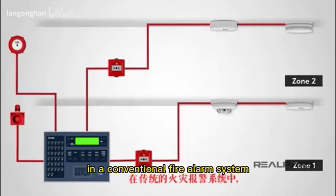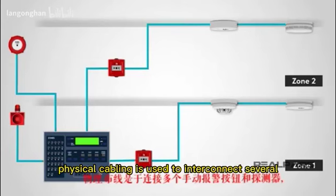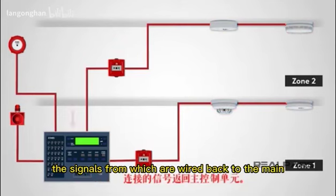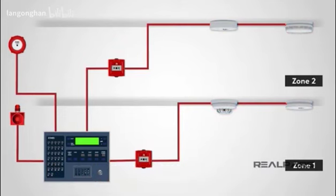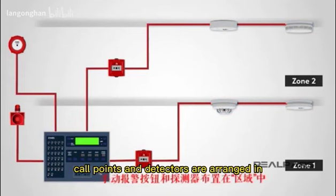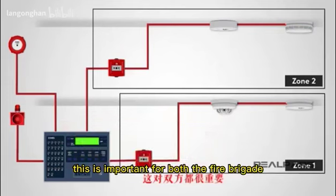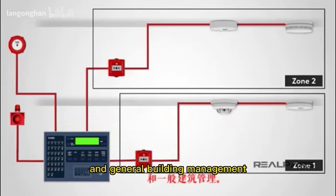In a conventional fire alarm system, physical cabling is used to interconnect several call points and detectors, the signals from which are wired back to the main control unit. Call points and detectors are arranged in zones to simplify locating the cause of the alarm. This is important for both the fire brigade and general building management.